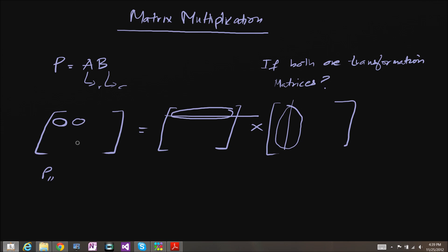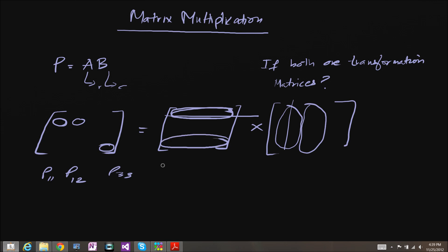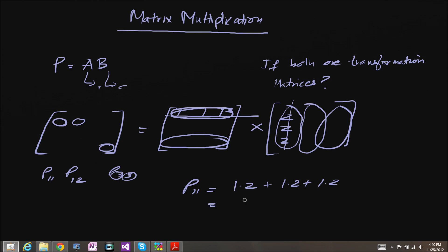P12 would be the dot product of this row and the second column. And if we want to find P33, this would be the dot product of the third row and the third column. So for example, let's say the row was 1, 1, 1 and the column was 2, 2, 2. Then P11 would equal 1 times 2 plus 1 times 2 plus 1 times 2. These are all scalar values, so the dot product is a scalar value, and this comes out to 6. So P11 is 6.